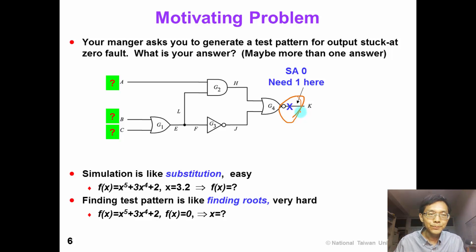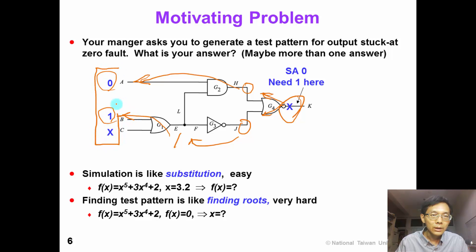Have you got the answer? Because we need the 1 at the output, so both the NOR gate inputs must be 0. Therefore, A can be 0 and EF must be 1. So we can choose B to be 1. So here is one of the test patterns. Please note that other answers may also be correct.